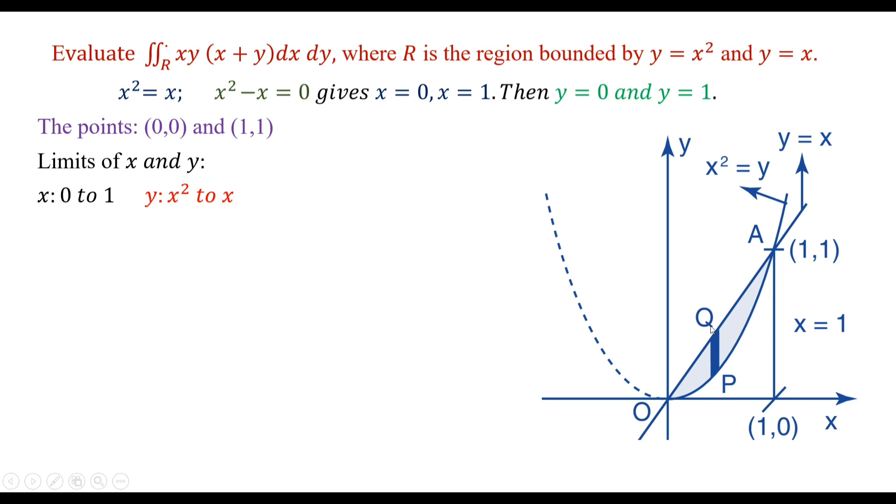Therefore, the limits for y are from x square to x. When we move the strip to cover the region, x varies from 0 to 1. Y varies from x square to x, where y equals x square is the lower curve and y equals x is the upper curve.